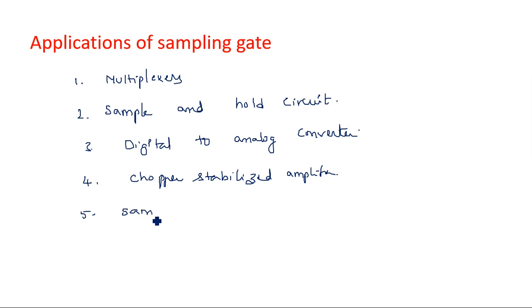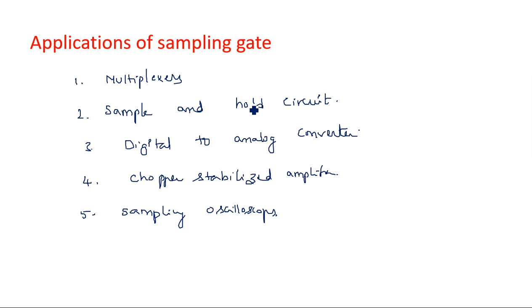The fifth application is sampling oscilloscopes. Sampling gates are used in multiplexers and sample and hold circuits. In a sample and hold circuit, the input signal is sampled for a fixed number of time intervals, and when reconstructing the signal at the receiver, the sample and hold circuit is used in the reconstruction part.